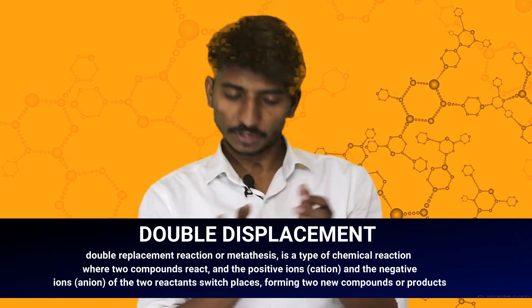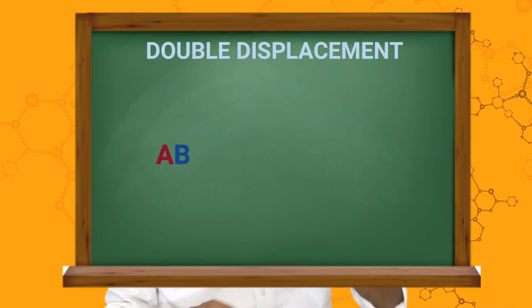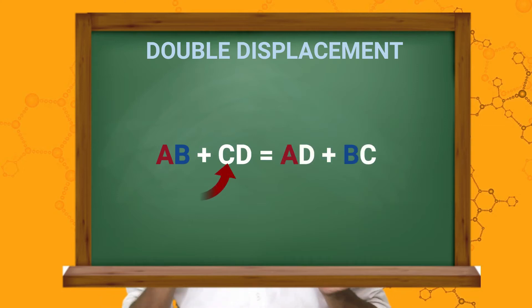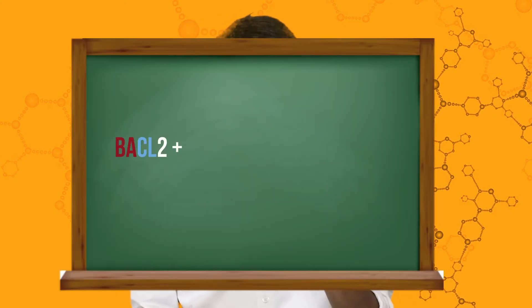In double displacement reaction, two compounds exchange their ions. The structure is: AB plus CD gives AD plus CB. Both elements swap partners to form new products. For example, Na2SO4 plus BaCl2 react together in a double displacement reaction, where sodium and barium exchange their respective anions to form new compounds.